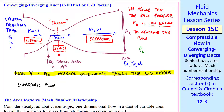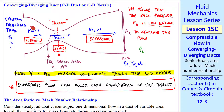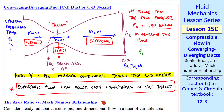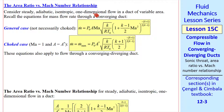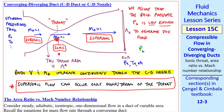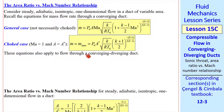Supersonic flow can occur only downstream of the throat — you can't have supersonic flow here, only here — again assuming that the back pressure is low enough to generate this flow. Now I want to talk about the area ratio versus Mach number relationship. Consider steady, adiabatic, isentropic, 1-D flow in a duct of variable area. From a previous lesson, we had two equations for mass flow rate through a converging duct: the general case where the flow can be choked or not, and the simplified case when the flow is choked and mass flow is maximum.